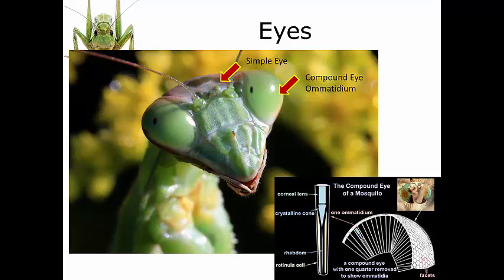Between the compound eyes, some insects have what are called simple eyes or ocelli. Not every insect has ocelli — it's possible to have zero, one, two, or three. You can see on this praying mantis the big compound eyes and then three dots right in the center — those are the ocelli. The simple eyes work for light detection; they don't form actual pictures. Instead, ocelli register if light is bright or dim, or how it changes, alerting the insect to potential danger like a predator casting a shadow.